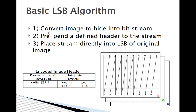The first algorithm I implemented is called the basic LSB algorithm. It essentially just goes and places the hidden image directly in the lower noise bed of the original image. Step one: we convert the hidden image into a row vector or bit stream. Step two: we prepend a header to the stream, which allows the decoder to recognize the preamble, know that an image has another image encoded within it, and tells it how many bits were utilized in the lower significant bits per byte, and the X, Y, and Z dimensions of the original hidden image so the decoder can reconstruct it. Step three: it places the stream directly into the lower significant bits of the original image.